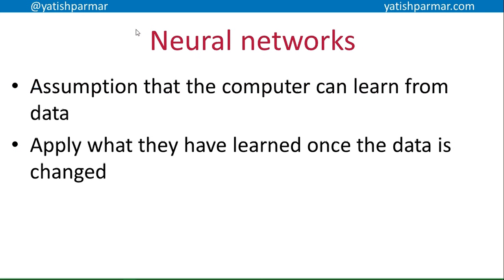The second type of AI we're concerned with is neural networks, where the assumption is that the computer is learning from data. We're not just filling a glass with knowledge — the neural network is actually learning and teaching itself. It can then apply what it's learned when data changes.